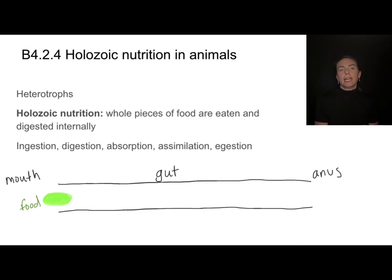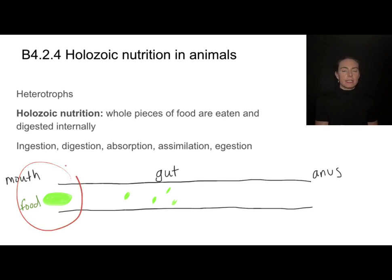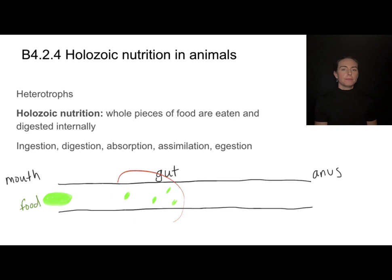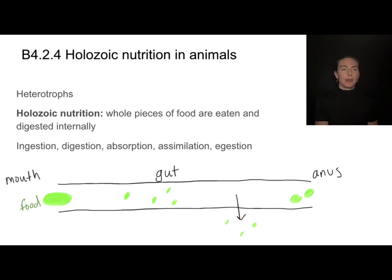For example, if I eat an apple, I put that food into my mouth and it passes through my gut. Ingestion is the eating itself. Digestion is the chemical breakdown into smaller molecules. Absorption follows — those smaller molecules pass into the bloodstream. Not all molecules can be digested and absorbed, however, so the leftover bits pass out through the anus as waste — we call that egestion.